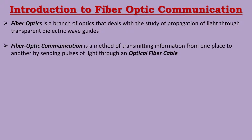In traditional communication, we use wires and antennas. Fiber optic communication is also one method of communication or information exchange. Here, light pulses and optical fiber cable are used to transmit information.